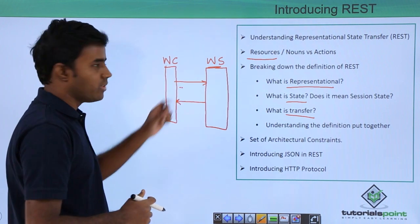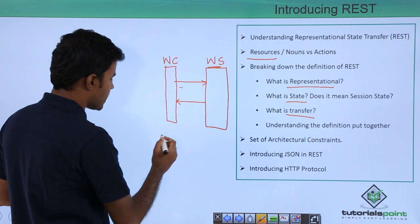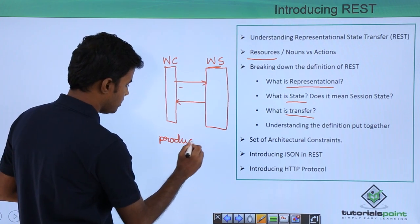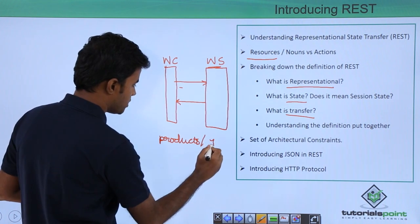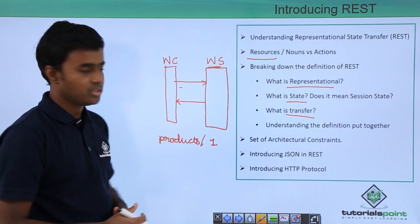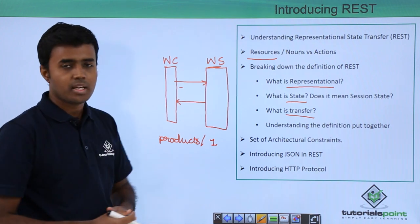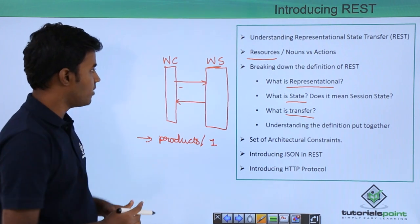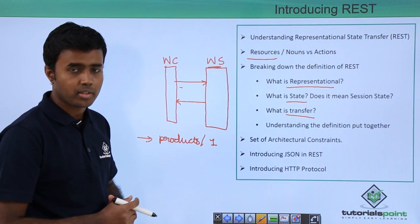If you see the request, the request can be something like products. I want the first product within your inventory. This one actually represents the ID of the product. This is a typical request given by the client to the server.